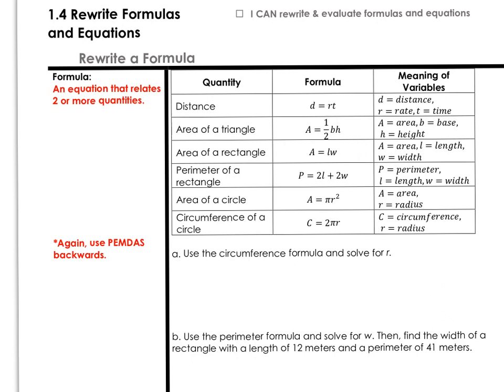We have distance formula, area for both triangle, rectangle, and a circle. We have perimeter for a rectangle and circumference. The definition of the variables are all listed on the right. Our goal in this lesson will be to take a formula and rewrite it, isolating one particular part. The plan will be to use PEMDAS backwards. Let's try a couple.